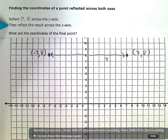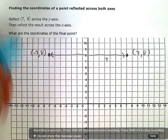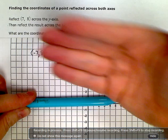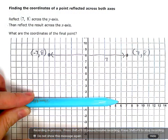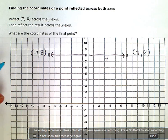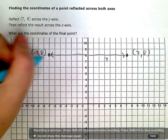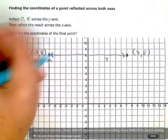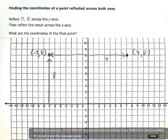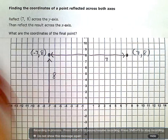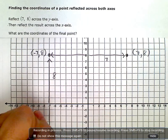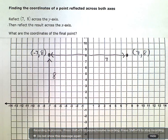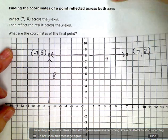Now, then reflect the result across the x-axis. So now I'm going to reflect over this line, or flip this point from the top to the bottom. So now, instead of being 8 units up from the x-axis, I'm going to flip it so that it is now 8 units down. I went off my screen there a little bit.